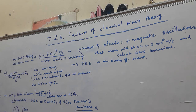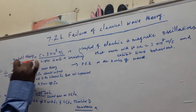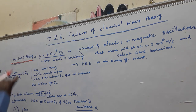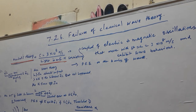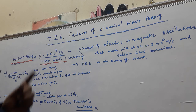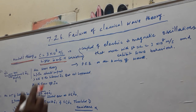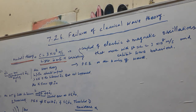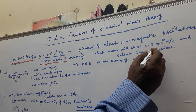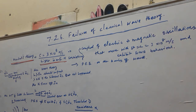According to Maxwell's theory of electromagnetism, which we have already studied, light is nothing but an electromagnetic wave. It consists of coupled electric and magnetic oscillations that move at the velocity of light, equivalent to 3 × 10⁸ meters per second. These electromagnetic waves exhibit wave-like behavior as per Maxwell's theory.